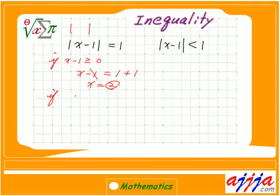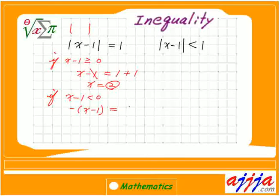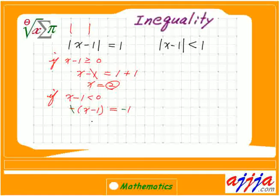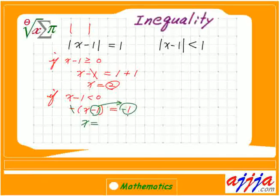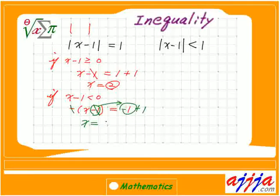Now the other case — else if x minus 1 is less than 0, which is negative, then you have to put a negative sign in front of it: negative (x minus 1) equals 1. Move the negative sign — because this is an equal sign it doesn't matter. So x equals negative, move to the right-hand side, it's positive 1, then plus 1, so minus 1 equals 0. That gives x equals 0.